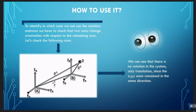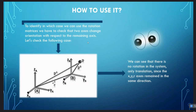Now let's talk about how to use the rotation matrix. To identify when we can use the rotation matrices, we have to check that two axes change orientation with respect to the remaining axis. That is, if the X and Y axes change, the Z axis remains fixed. Let's check the following case. We can see that there is no rotation in the system, only translations, since the X, Y, and Z axes remain in the same direction. In case there is rotation, we must work with the homogeneous matrix, which we will see in the next video.